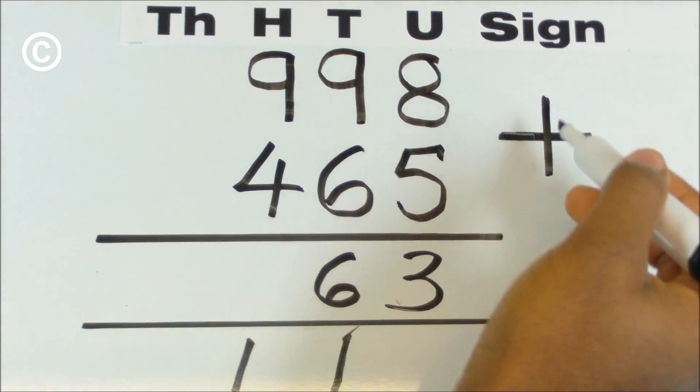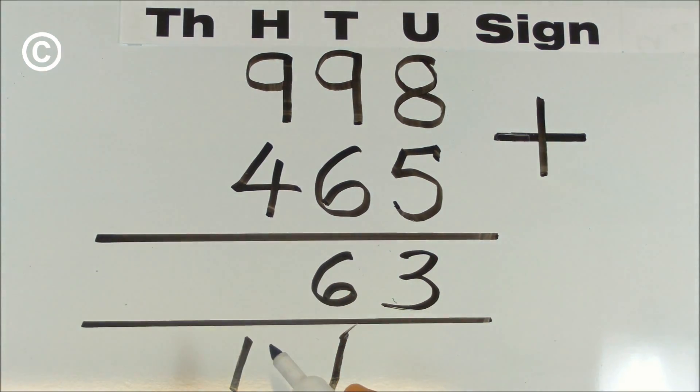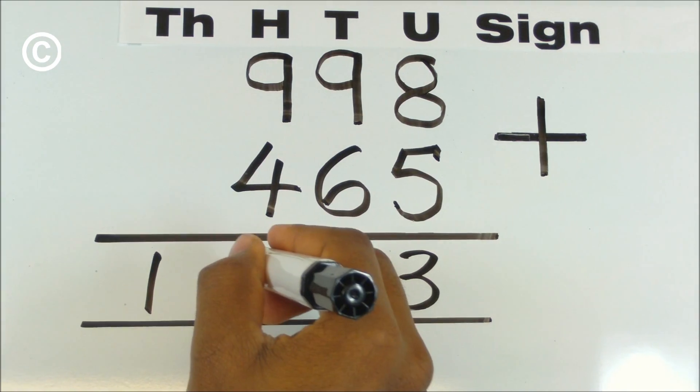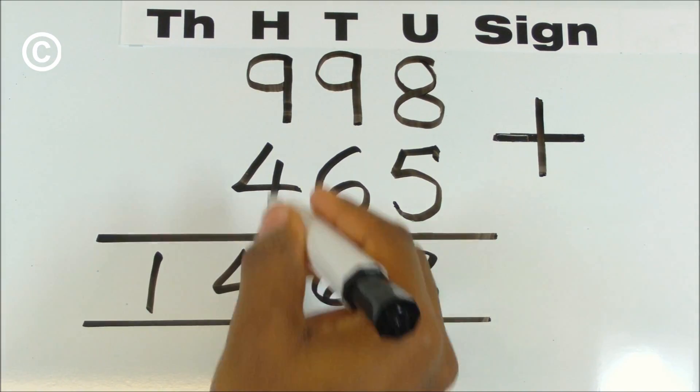9 plus 4 plus 1 is 14. You carry the 1 into the thousands column and the 4 into the hundreds column.